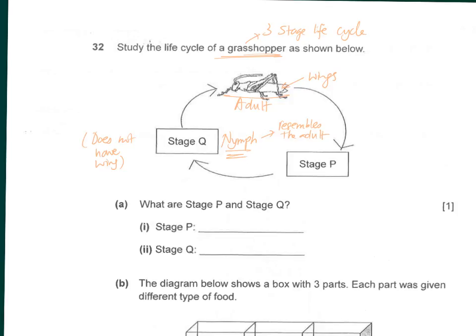Before the grasshopper adult stage you should have a stage — the young of the adult is the nymph. It looks very similar to the grasshopper except it doesn't have wings; it resembles the adult. Before the nymph stage we have the egg stage. So stage P should be the egg, and stage Q is the nymph stage.